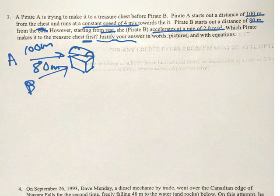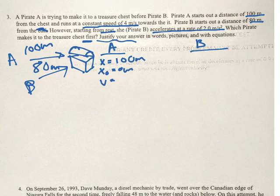Moving on to 3. Pirate A is trying to make it to a treasure chest before Pirate B. Pirate A starts at a distance of 100 meters from the chest and runs at a constant speed of 4 meters per second. Pirate B starts at a distance of 80 meters from the chest. However, starting from rest, she accelerates at a rate of 2 meters per second squared.